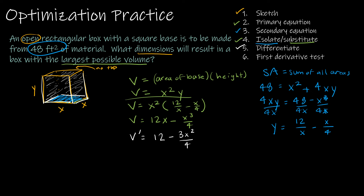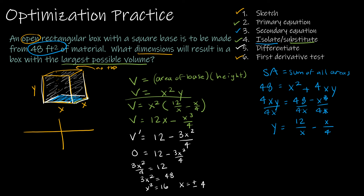Setting the derivative equal to zero: 0 = 12 − 3x²/4. Add 3x²/4 to each side: 3x² = 48, so x² = 16, meaning x = ±4. Since this is a story problem, I won't use x = −4 as it doesn't make sense in context. So the critical value is x = 4, and I'll apply the first derivative test on the intervals (0, 4) and (4, ∞).